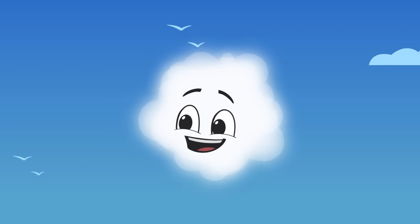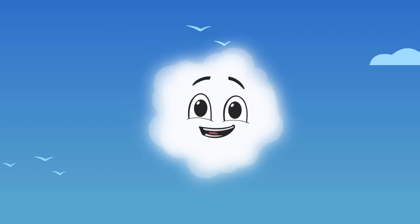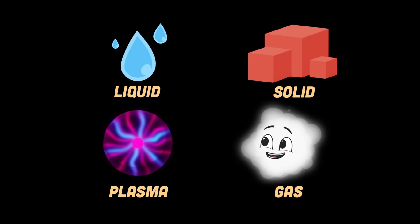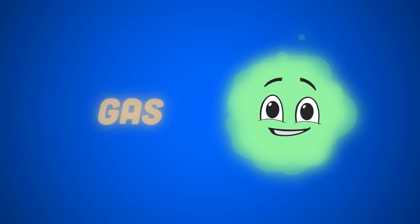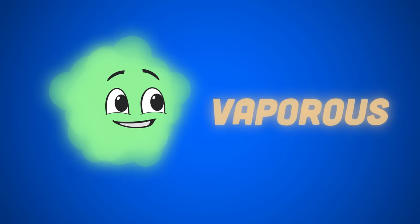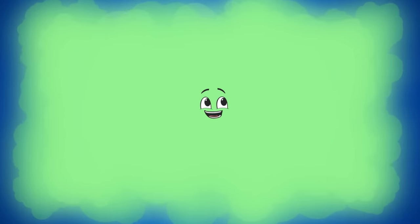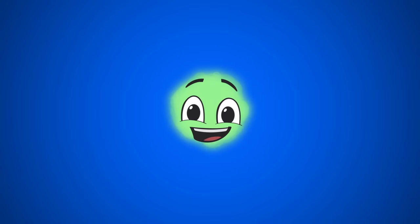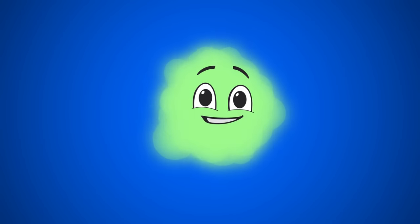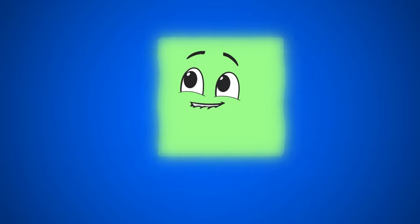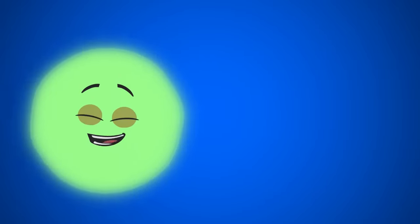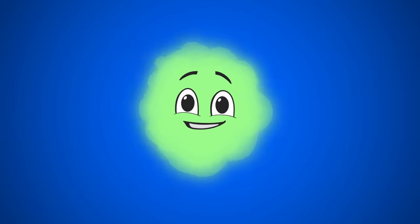Gas is one of the four natural states of matter, along with liquid, solid, and also plasma. Gas is a substance that's in a gaseous or vaporous state. Because it'll expand or compress for its container, gas doesn't have a fixed volume or shape. The particles have enough kinetic energy to move in any direction.